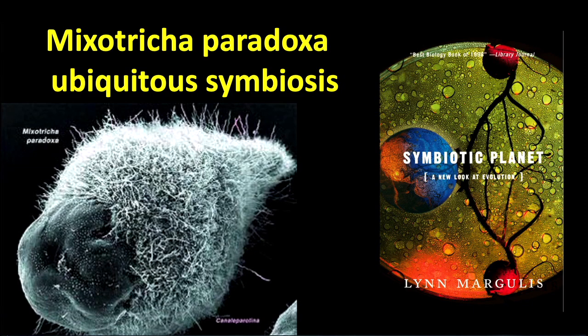Leaving you with Mixotricha paradoxa — if you're interested in all the wonderful ways life on Earth results from endosymbiosis, you can do no better than looking at Mixotricha paradoxa, which lives inside the gut of a termite. Read Lynn Margulis' Symbiotic Planet. The idea we've looked at here is that endosymbiosis has been an important way life on Earth has produced novelty, and because it's important on Earth, maybe it's important also on other Earths elsewhere in the universe.